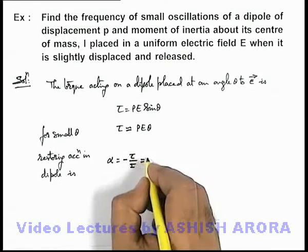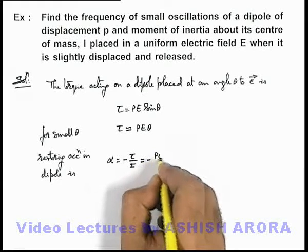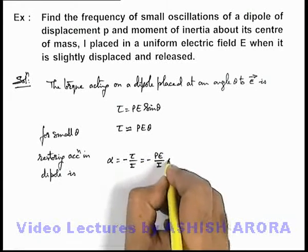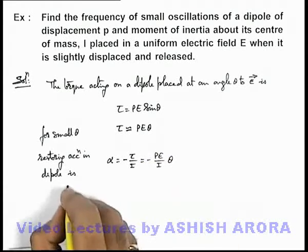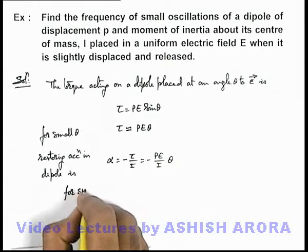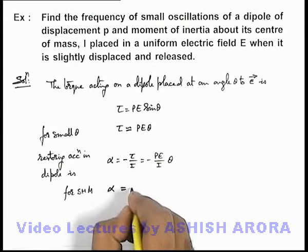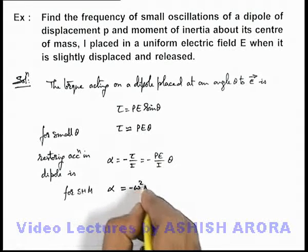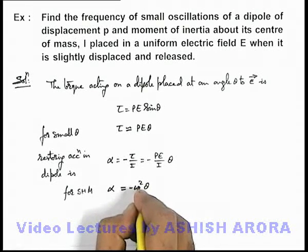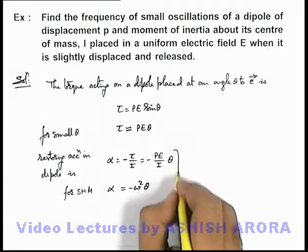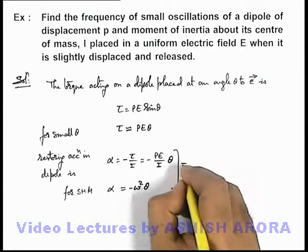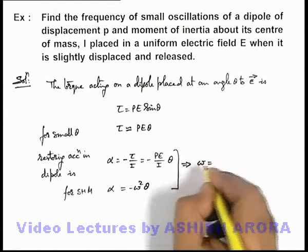We know for simple harmonic motion of a particle, its angular acceleration is equal to minus omega squared theta, where omega is the angular frequency of the system. Comparing these equations, we get the value of angular frequency.